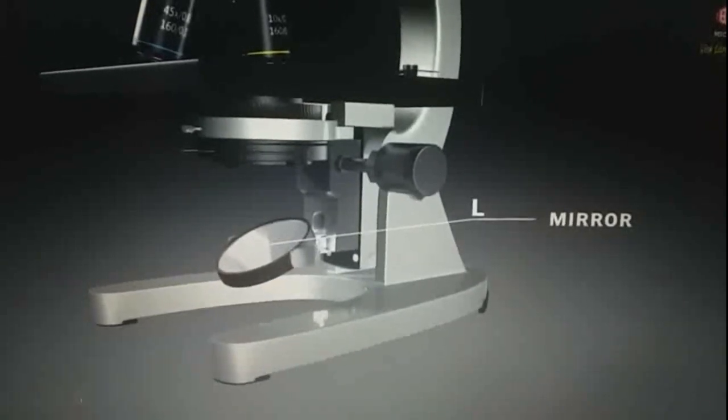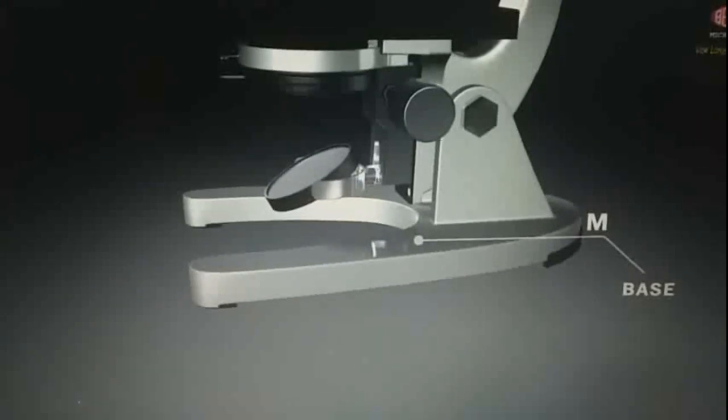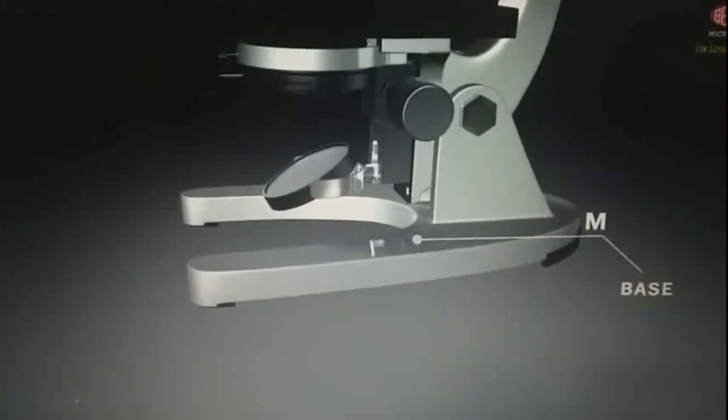L, mirror. It increases the amount of light shining through your slide or sample. M, base. It is the heavy bottom part which supports all the other parts of microscope.